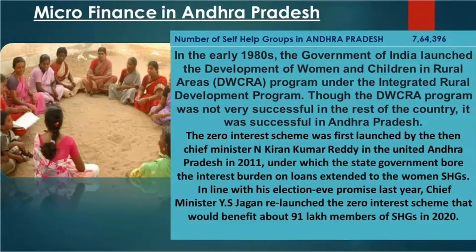Later, the zero interest scheme was first launched by Chief Minister N. Kiran Kumar Reddy in United Andhra Pradesh in 2011. When the state was bifurcated, that scheme was discontinued. Under this scheme, the state government bore the interest burden on loans extended to women's self-help groups. In 2020, Chief Minister YS Jagan relaunched the zero interest scheme, which would benefit about 91 lakh members of SHGs.